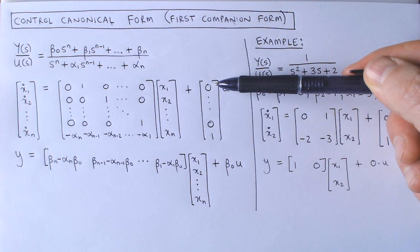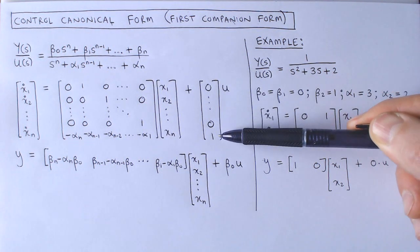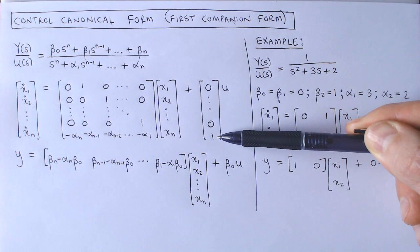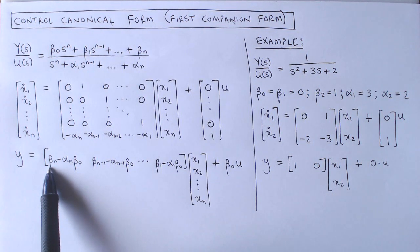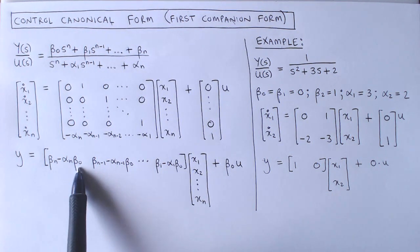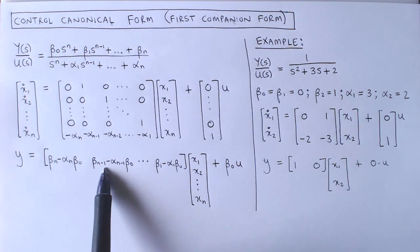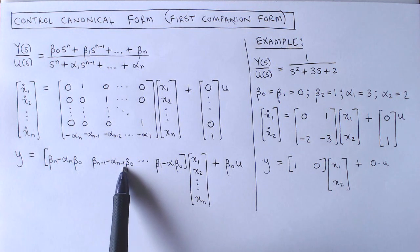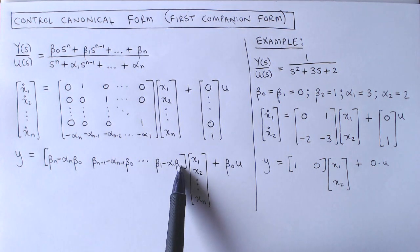In the B vector, all the elements are zero except for the last element, which is 1. The first element of the C vector is given by beta n minus alpha n times beta 0. The second element is given by beta n minus 1 minus alpha n minus 1 times beta 0, and it follows the same pattern for the rest of the vector.